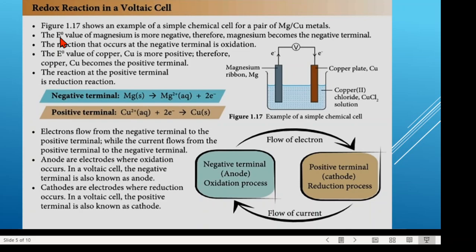The enode — the potential difference value of magnesium — is more negative, therefore magnesium becomes the negative terminal. We have already learned that when the enode or potential difference value is more negative, it will become the negative terminal. The negative terminal is the one that will donate electrons.